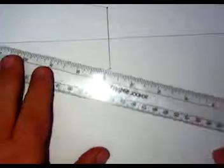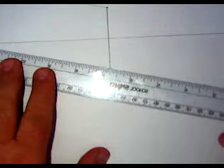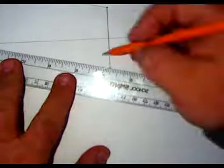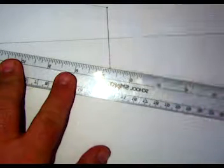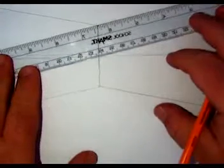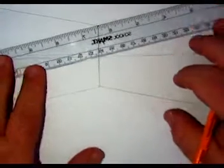Repeat the process on the other side, drawing a line lightly that connects to the first vanishing point or the vanishing point on the left at both the top and the bottom.